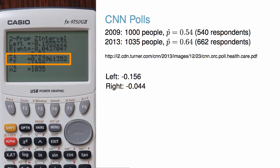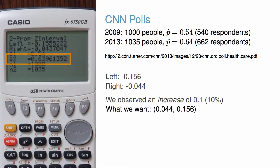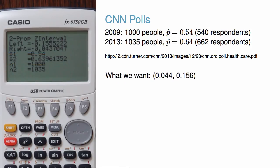Notice that the interval is actually reversed from what we want. We observed an increase of 10% from 2009 to 2013, so the actual interval should be 0.044 to 0.156. It is common to have the interval get turned around in the calculator, which is why it is important to read your calculator results carefully and think about how it fits in the context of the problem.